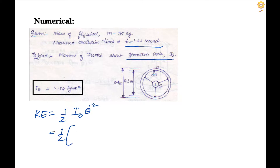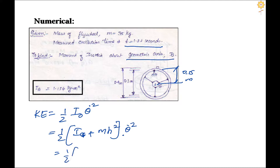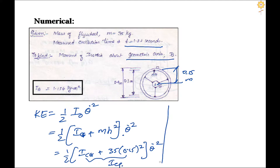Using the parallel axis theorem, I_O = I_CG + m·H², where H is the radius = 0.3/2 = 0.15 m. So KE = half times (I_CG + 35 × 0.15²) × θ̇². This entire bracketed term is I_equivalent. This is a compound pendulum problem, so PE = M·G·H, where H is the height difference of the CG.